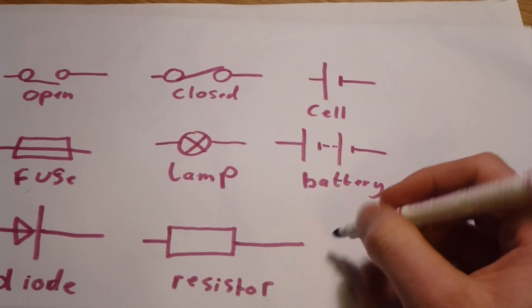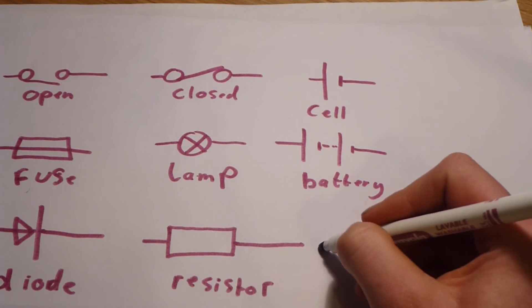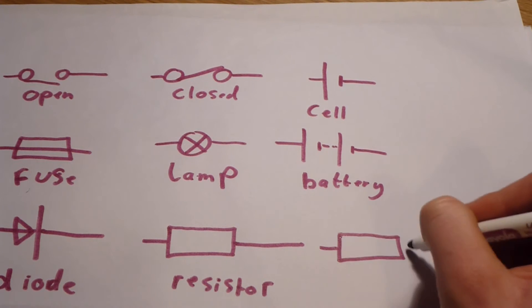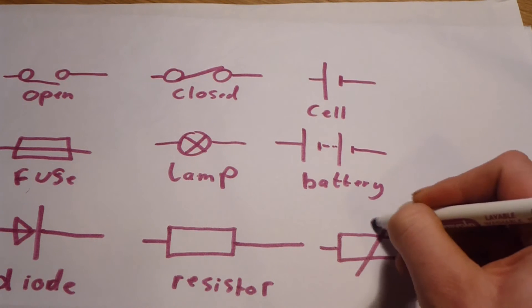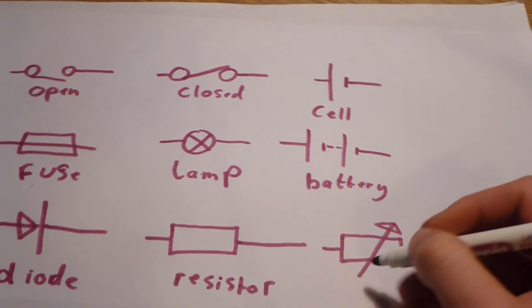After the resistor, we have a variable resistor, which is very similar to a resistor that has an arrow going through it to show it's a variable.